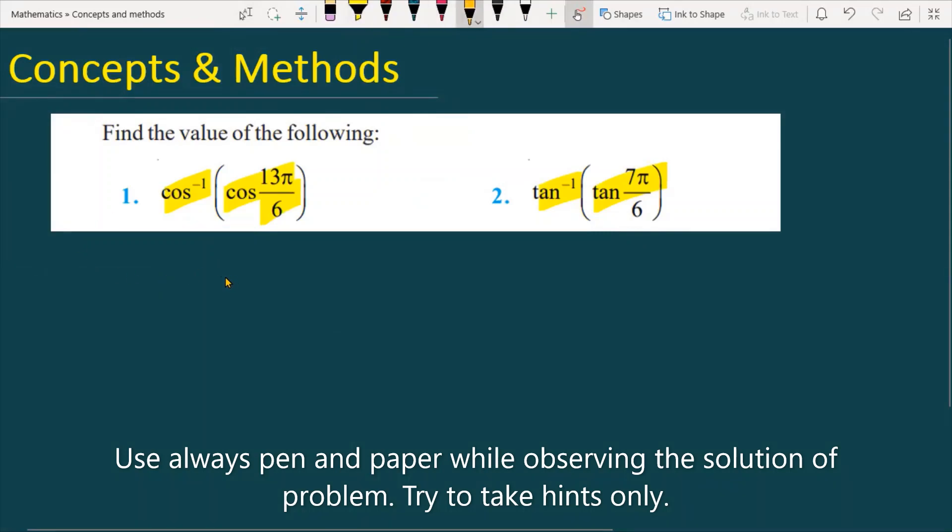I will start with question number 1. First of all I am going to note the problem which is cos inverse, that is cos inverse cos 13π upon 6. Before solving this question you should have some conceptual knowledge.